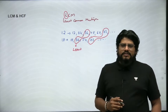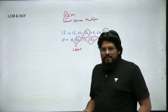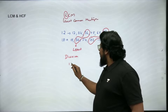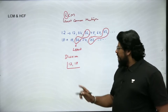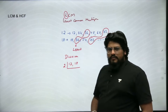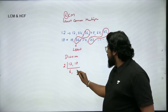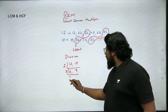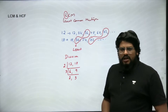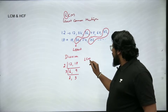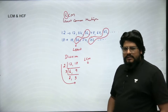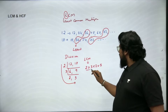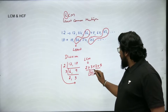For all numbers, we can't just list out all multiples and look for common ones — we need a method. The first method is the Division Method. For 12 and 18, we divide both numbers by 2, giving us 6 and 9. Then 3 is common, giving us 2 and 3. Between 2 and 3 there's nothing common, so we stop. To find LCM, we multiply all these numbers: 2 × 3 × 2 × 3 = 36.